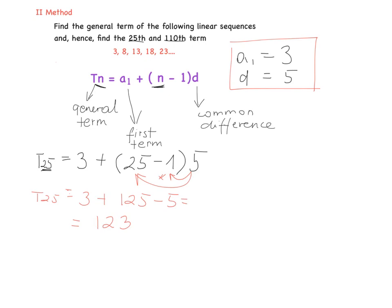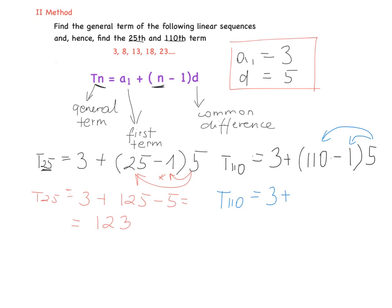Now we find the 110th term — same formula. T110 = 3 + (110 − 1) × 5 = 3 + 5 × 110 − 5 × 1 = 3 + 550 − 5 = 548. The same answer as on the last page.